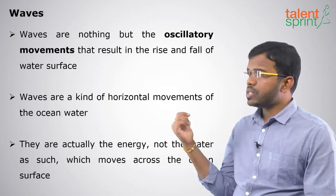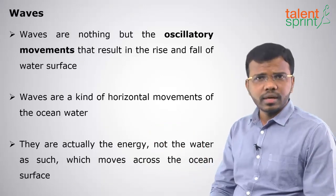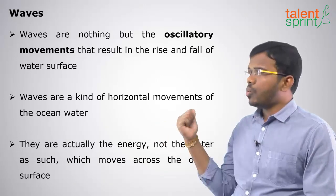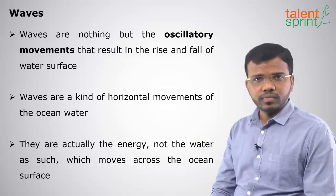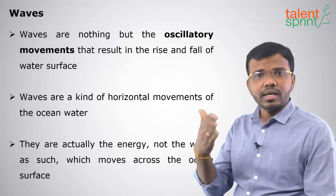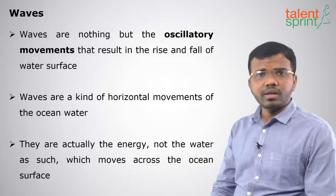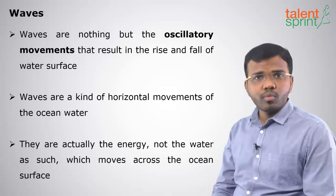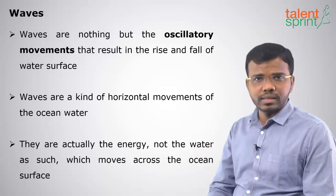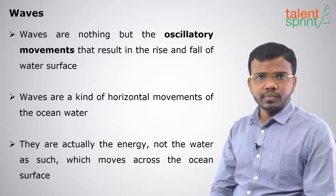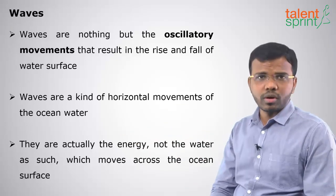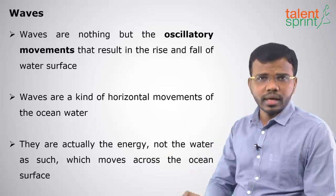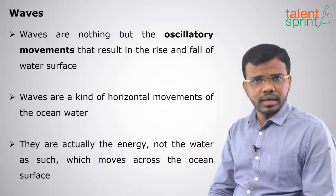Moving on to waves first. A wave is an oscillatory movement of the ocean water with the rise and fall of the water. The rise of the water is called a crest, and the fall of the water is called a trough. This is the horizontal movement of the ocean water — it moves in the x direction, not vertically. Waves always move in a horizontal direction from one place to another, not in vertical direction.